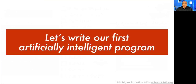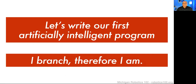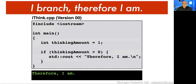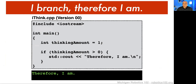Because this is an AI and programming course, let's write our first artificially intelligent program. The mantra for this is: 'I branch, therefore I am.' I wrote this code — think.cpp. It's very much like our Hello World program from before. All it's doing is printing out 'therefore I am.' But note that I have a variable here — this is the amount that I am thinking. I initialize this variable equal to one.